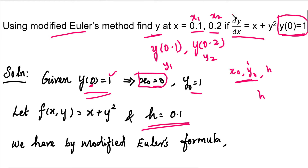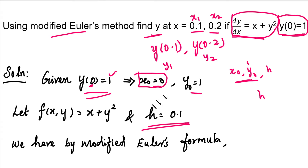We can write the differential equation as f of x, y — that is, dy/dx equals f of x, y. In this problem, the function value is x plus y squared. So if we use these values in the formula, we will apply the modified Euler's formula.